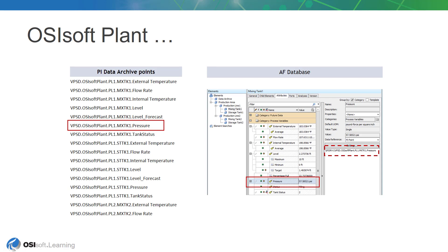A collection of PI points are built on the PI Data Archive for storing the values of process variables. There is also a hierarchy built in AF for this plant, bringing all the important information and data, including the process variable time series data, to one place.